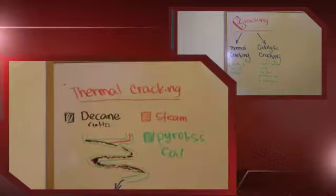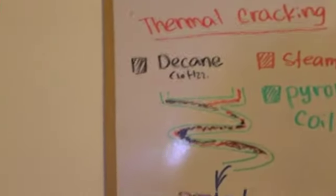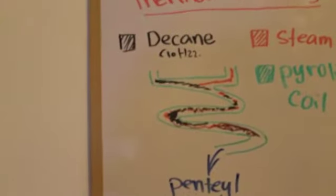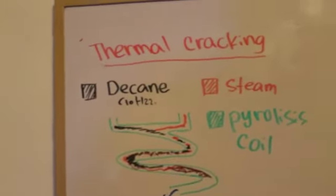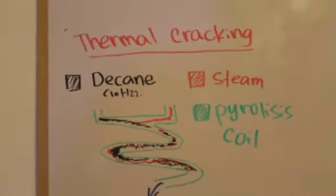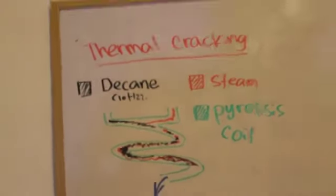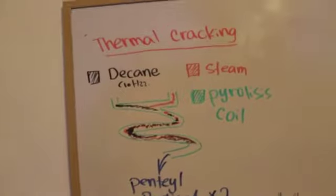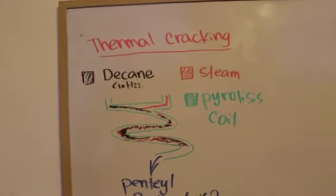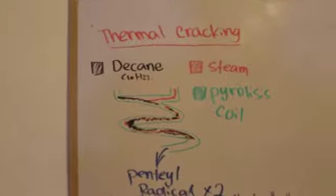As I mentioned, there are two types of cracking: thermal and catalytic. This one is the thermal one. In order to thermally crack a hydrocarbon, in this case C10H22, what we need to do is use steam. It's not just normal steam - we use steam at the temperature of 750 degrees, which I didn't write over there.